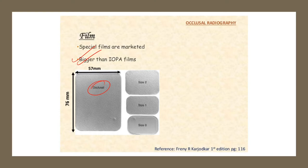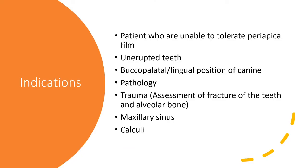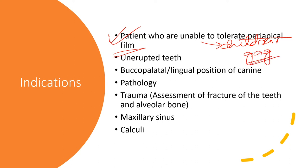The indications for occlusal radiography include: patients who are unable to tolerate periapical radiographs, such as children who may gag or find it irritating. The occlusal radiograph is less irritating — you just place it in the mouth and take the radiograph.